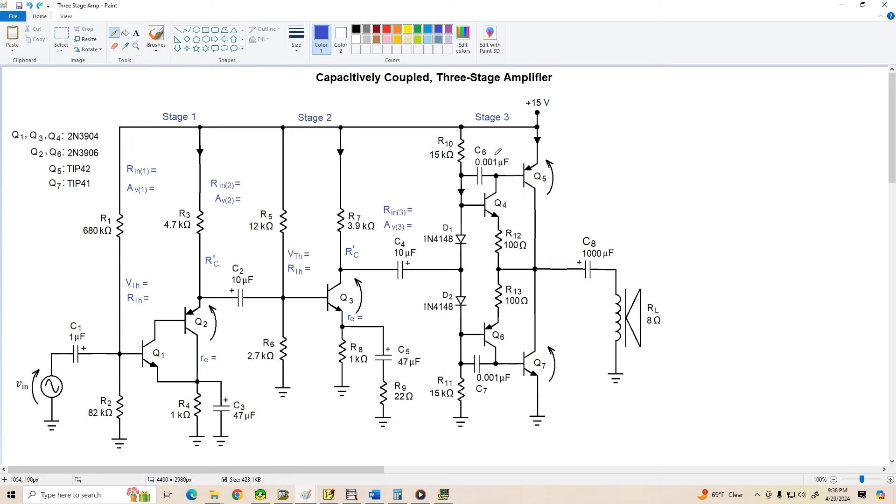Now stage 3 should look familiar. This is basically the same push-pull complementary symmetry circuit we used in the previous video. The main difference is that I increased the values of biasing resistors R10 and R11 from 10k to 15k. And I did that so that I could center the Q point on the AC load line for stage 2 in order to maximize output voltage swing.